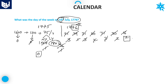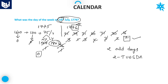The right-hand side value is 2, so the total number of odd days is 2. If the number of odd days is 2, that day is called Tuesday — because 0 is Sunday, 1 is Monday, and 2 is Tuesday. That is the answer for this question.